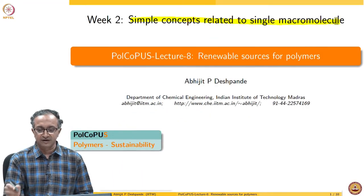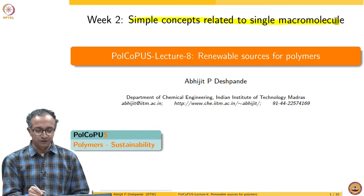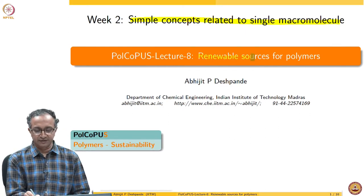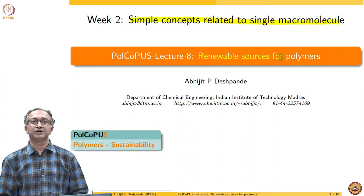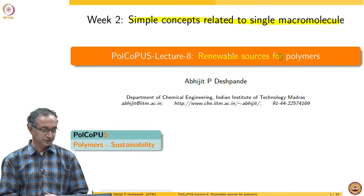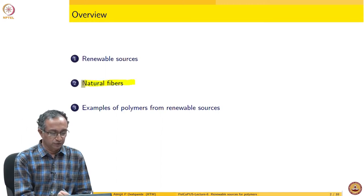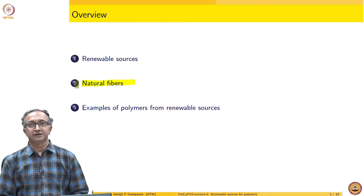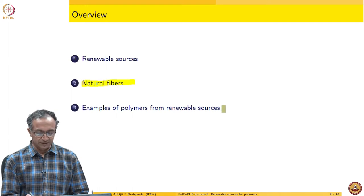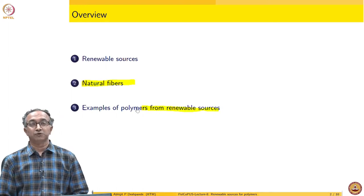We are in week 2, where we will start looking at a single macromolecule in much more detail. To begin with, let us look at renewable sources for polymers and how macromolecules can be made from renewable resources. We will first define what renewable resources are, then look at natural fibers as an important set of renewable resources used in polymeric systems, and end with a couple of examples of polymers based on renewable resources.